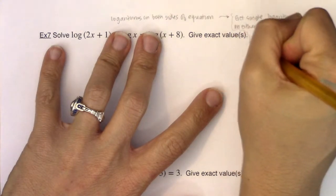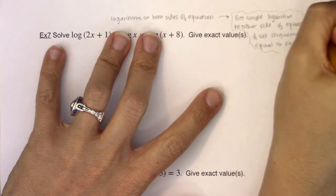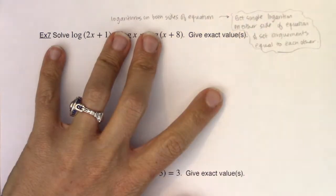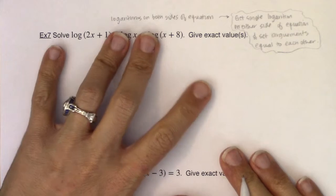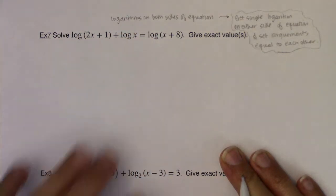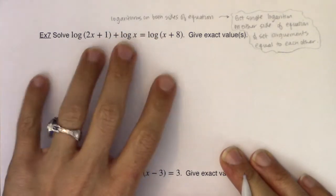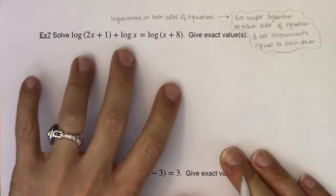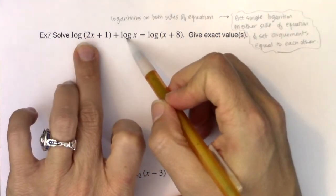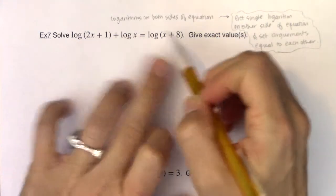All right, so let's go ahead and evaluate or just take a closer look at what we have here. I have a logarithm, I have two logarithms on this side of the equation, right? So I have two here, one here.